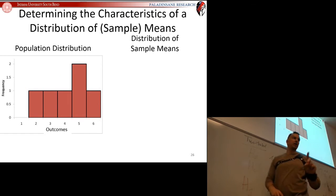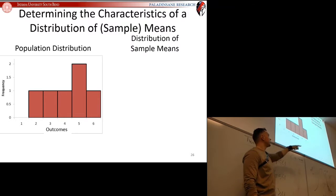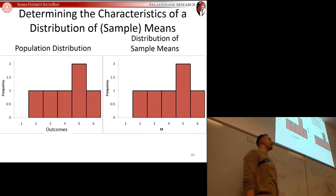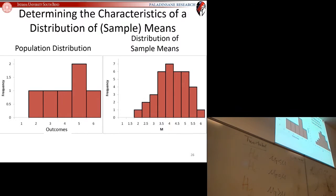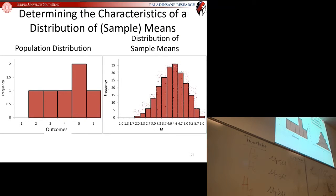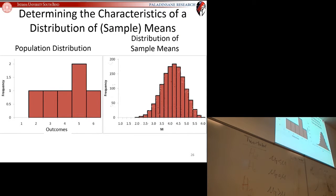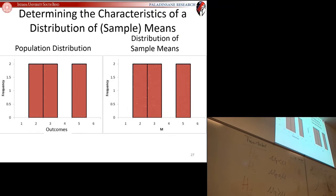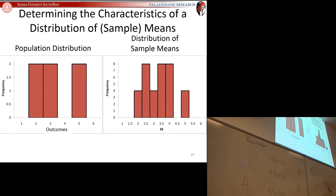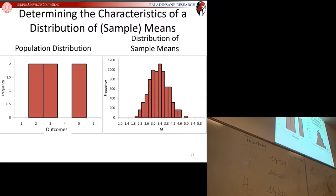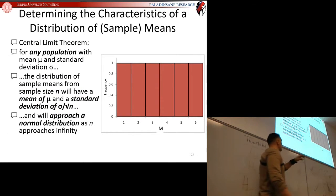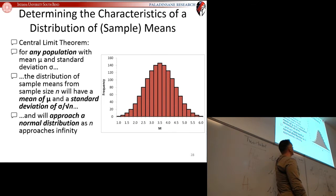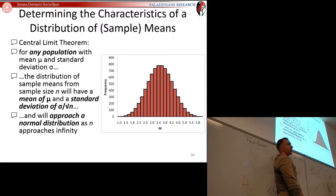If you have a population distribution, you have a very different distribution of sample means as soon as your sample size goes above 1. You can see that for sample sizes of 2, 3, 4, 5, the distribution gets much more like a normal distribution. That happens for any population, and that's why we don't need to know what a population looks like—as long as we're taking a sample, the distribution of sample means will be normal.